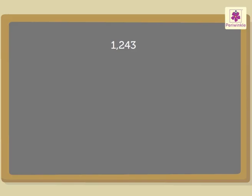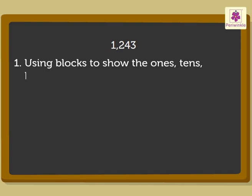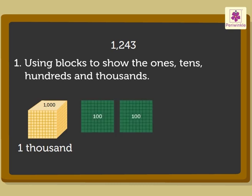Let us begin. First, we can use blocks to show the ones, tens, hundreds, and thousands in the number — as one block of one thousand, two blocks of one hundred, four blocks of tens, and three blocks of ones.